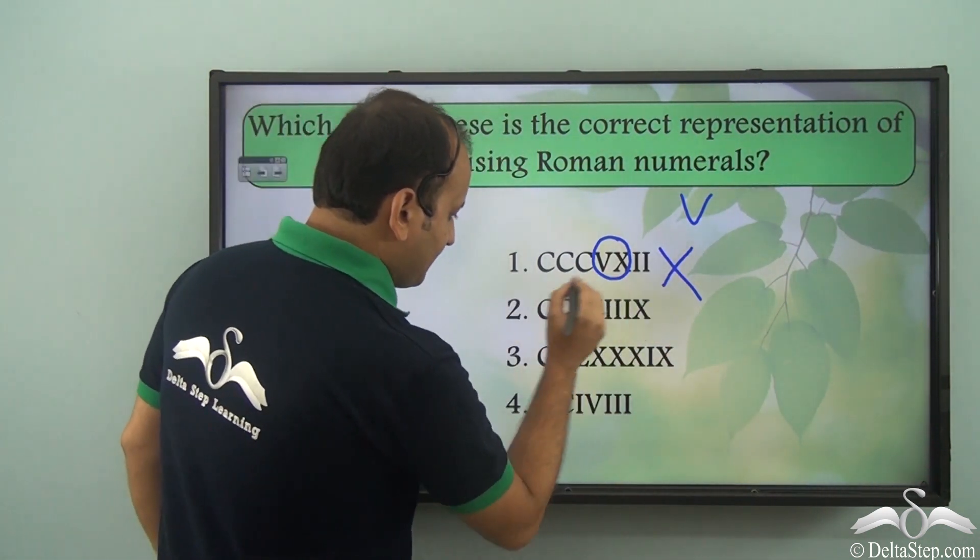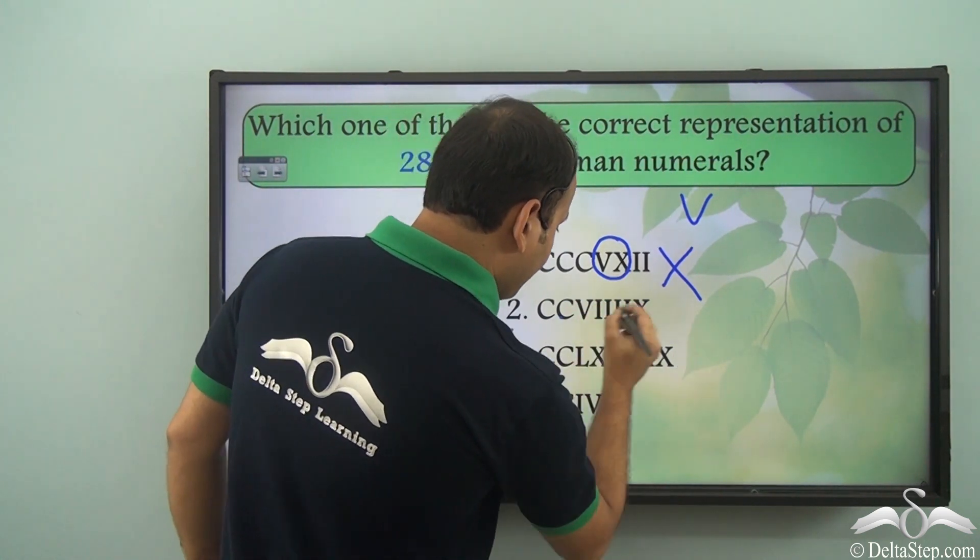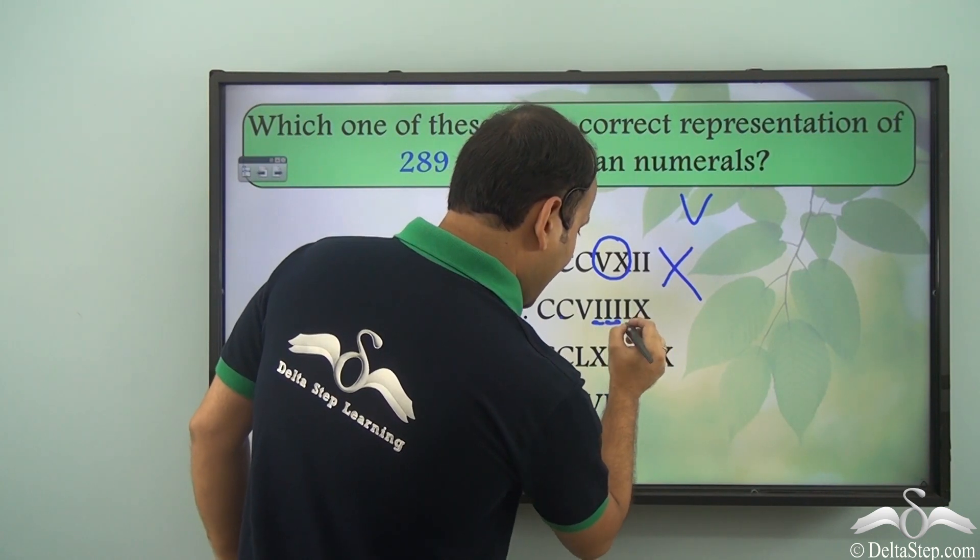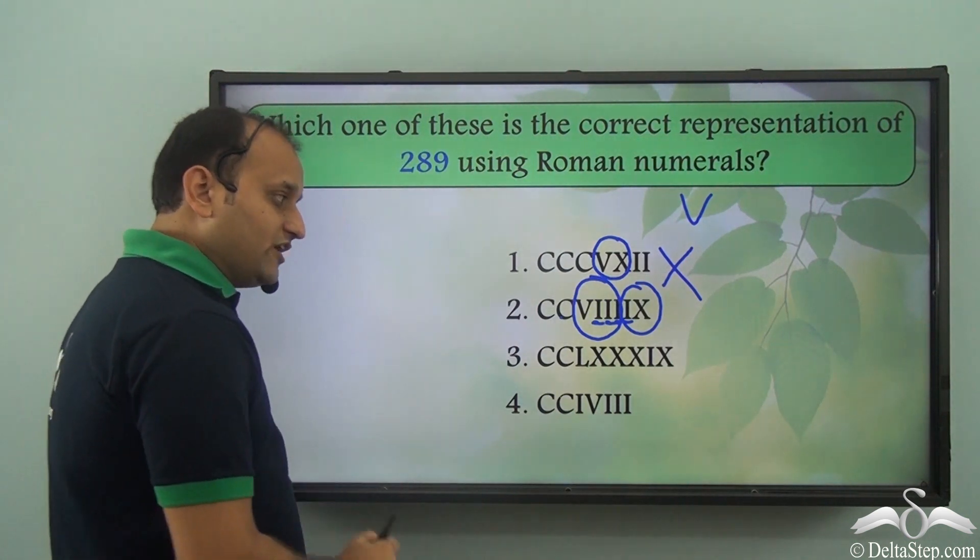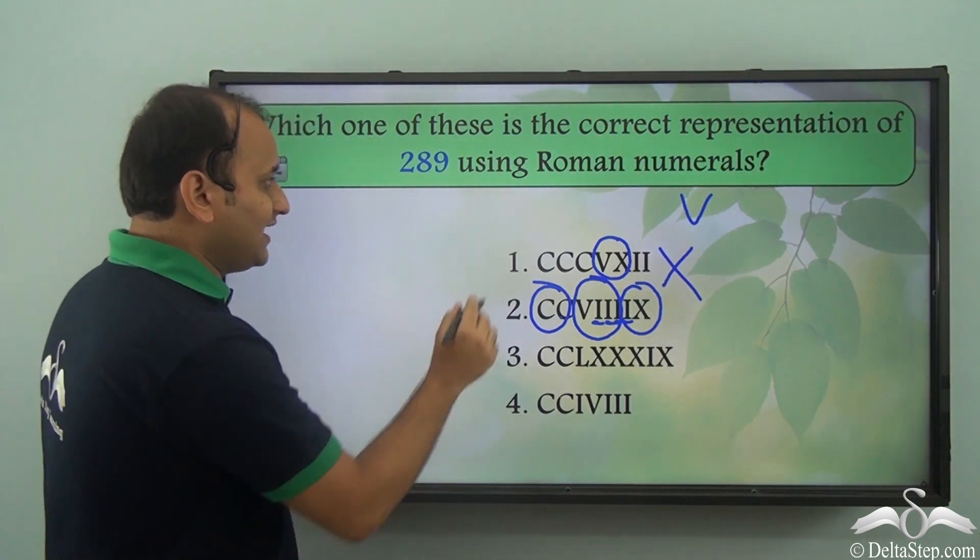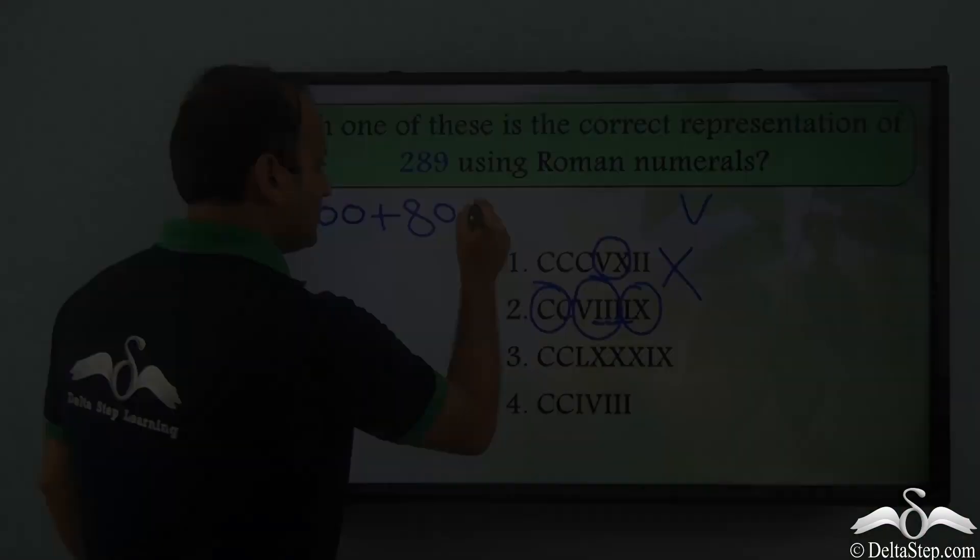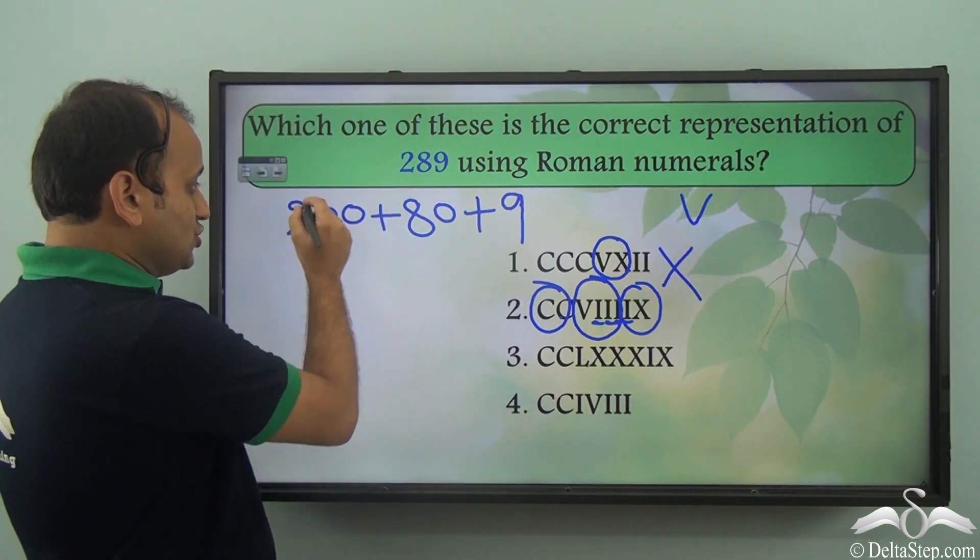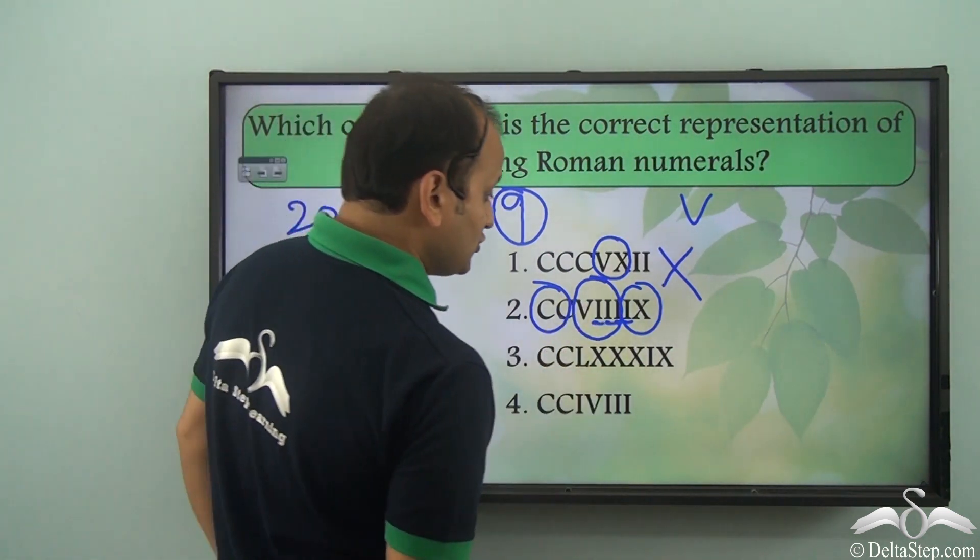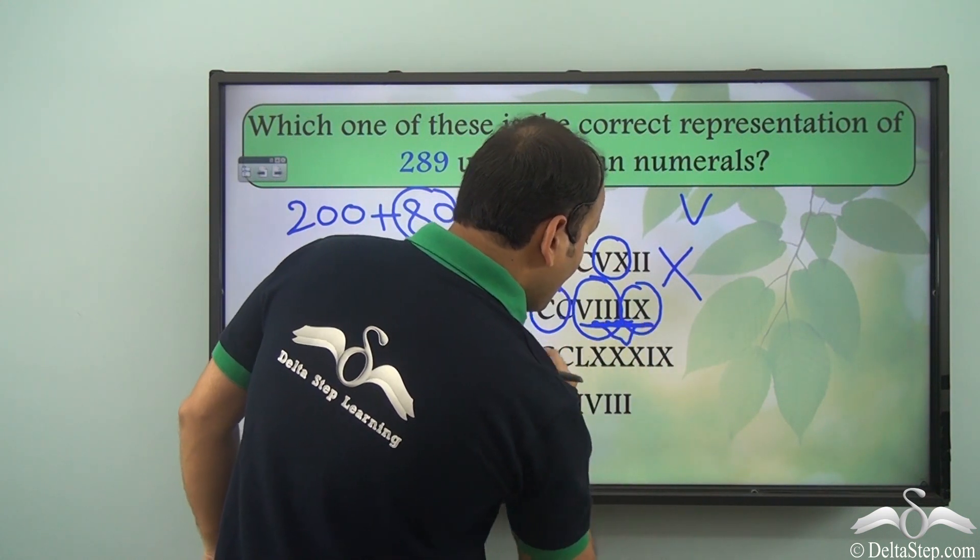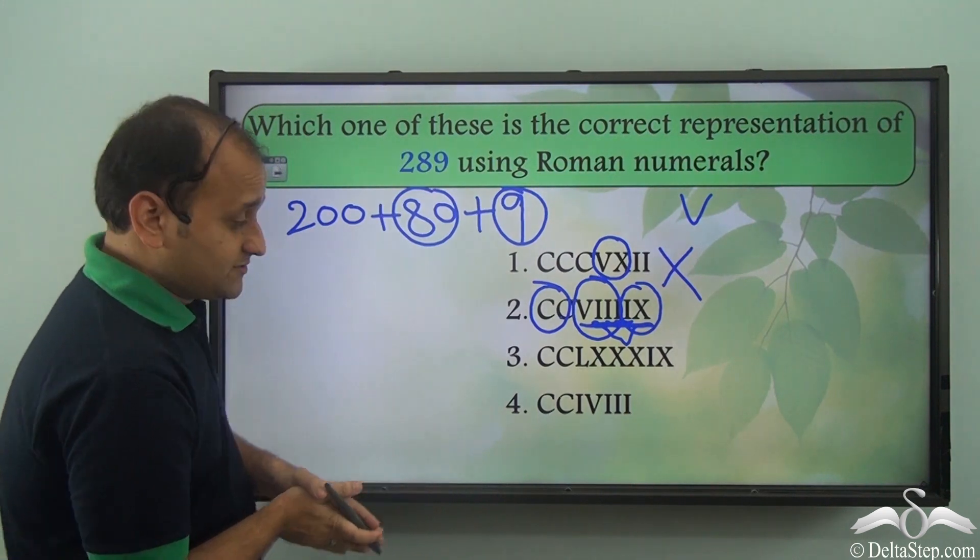Now let's come to this. We have 100 and 100. So that is 200. Then we have a V, that is 5, and then we have 1, 2, 3 and 4 ones and then an X. So even if we take this as 1 unit and this as 1 unit, we have 200 and then we have an 8 and then we have a 9. It doesn't represent 289 because it is 200 plus 80 plus 9. So it cannot be 289. If you write in this particular form, it will be wrong. And also you must have noticed that here 4 of the same symbol is being used. That is I is being used 4 times, which is anyways not allowed in Roman numerals.